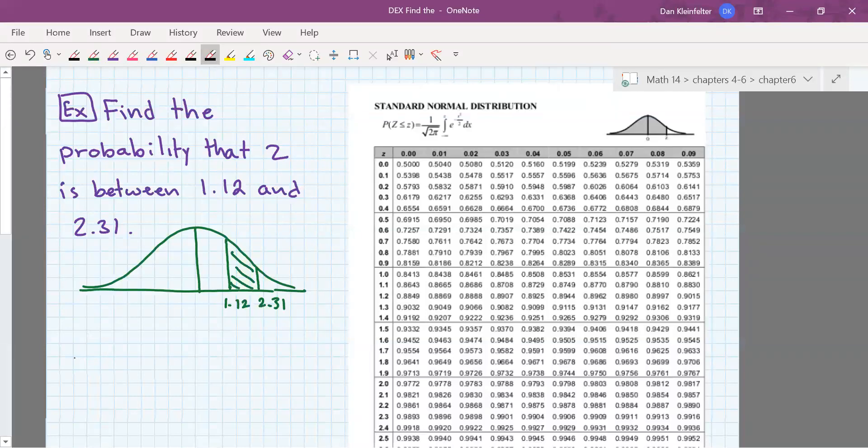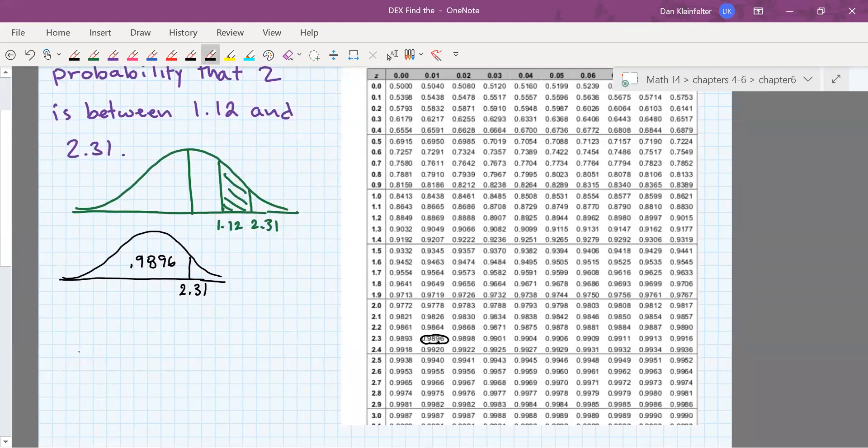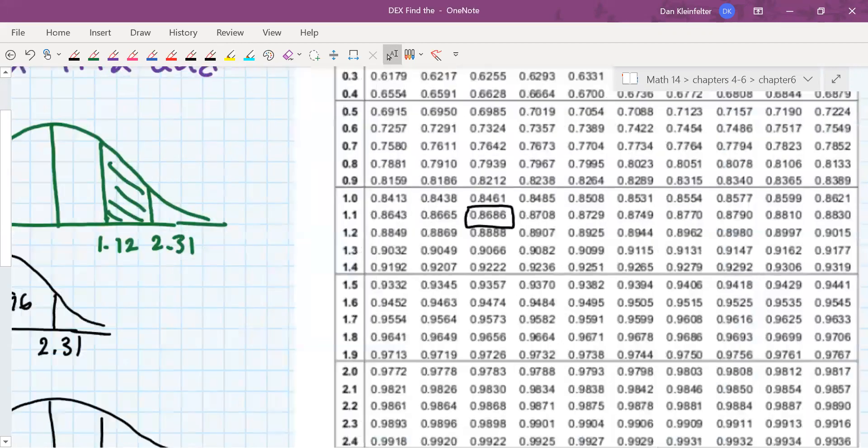So to see this, let's first draw the area up to 2.31. So up to 2.31 using our table, that's 0.9896. The area up to 1.12 is 0.8686.